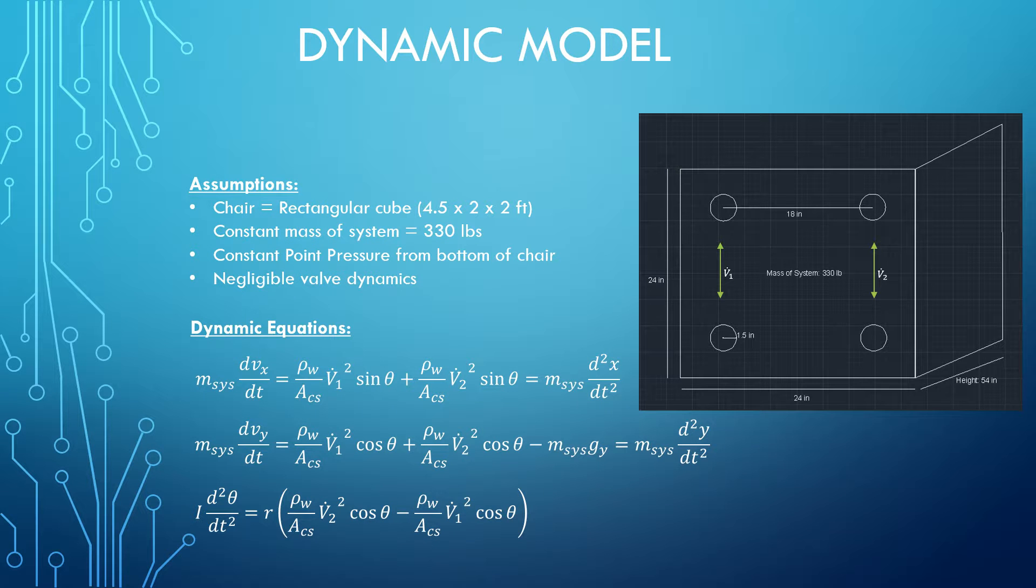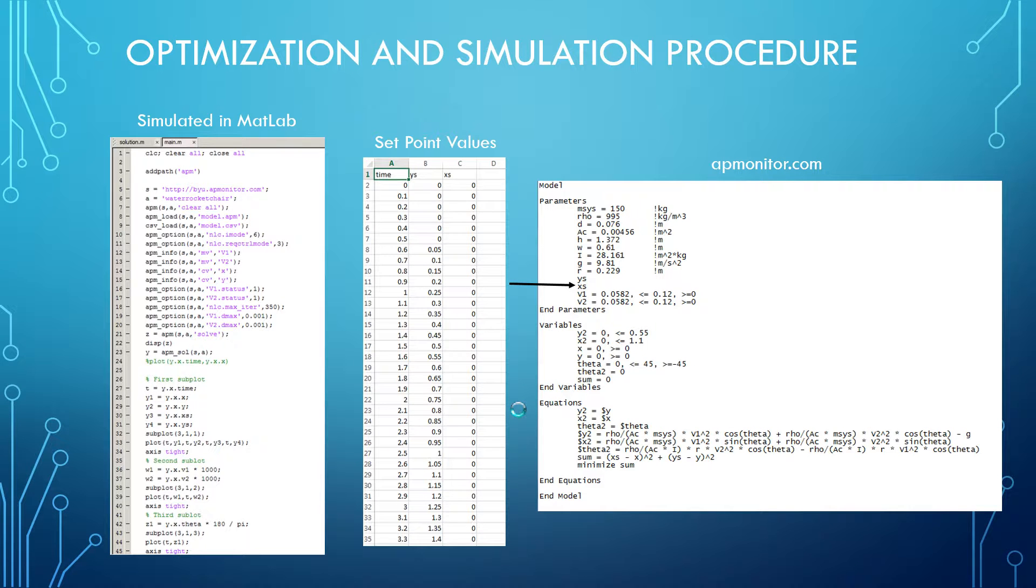In order to do that, we used both MATLAB and APMonitor.com. First we wrote up our model in APMonitor.com. Here are our equations that you saw on the previous page. We created an objective where we fed it set points, had it take the sum squared error between our set point and actual position, and then minimize that difference.